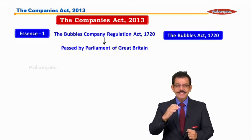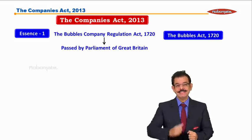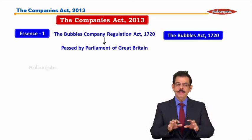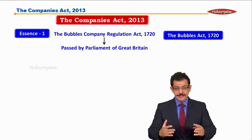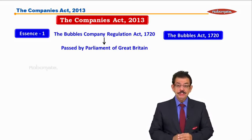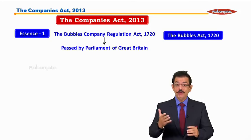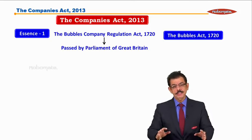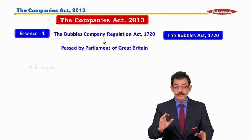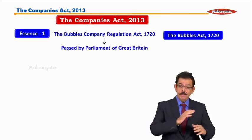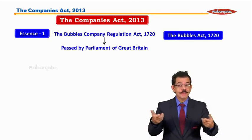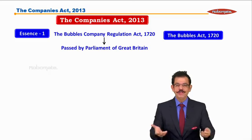Toh zara samjhiye what is this Bubbles Act. Ab dekhiye, European country mein colonialism, imperialism hua, jiske wajah se world wars huye. Toh jabhi bhi war hota tha, saari European economies, especially England, sara apna resources kahin divert kar deti thi — war ke goods banane mein, like ammunition, food supply, uniform, etc.